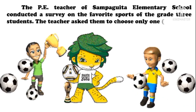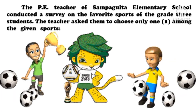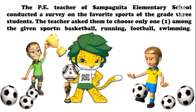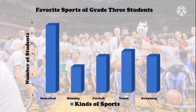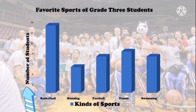The teacher asked them to choose only one among the given sports: basketball, running, football, swimming, and tennis. Let us study the data through a bar graph. The title is 'Favorite Sports of Grade 3 Students.' On the x-axis are kinds of sports, and on the y-axis are the numbers of students. Basketball: 13 students, running: 5, football: 7, tennis: 8, and swimming: 7 students.